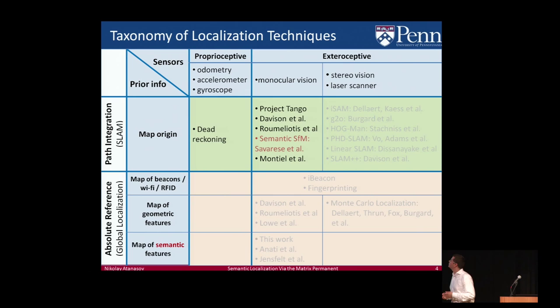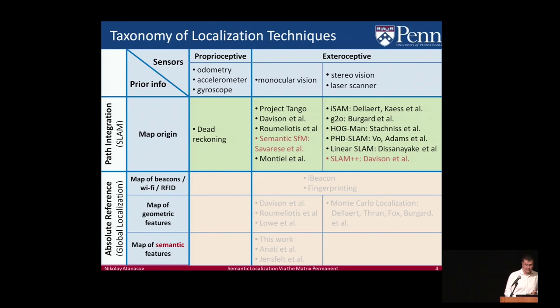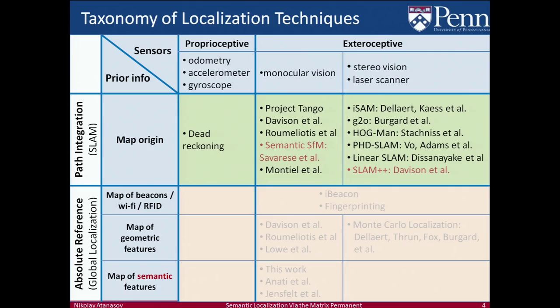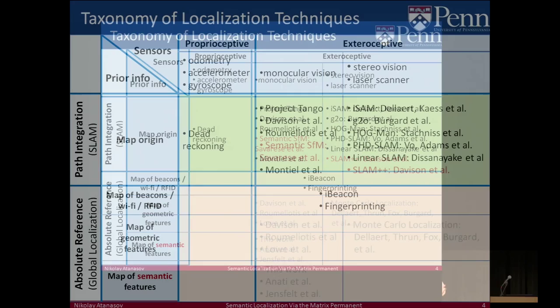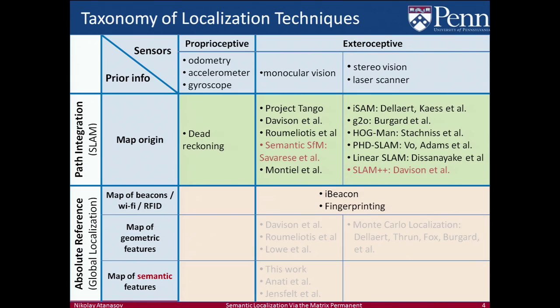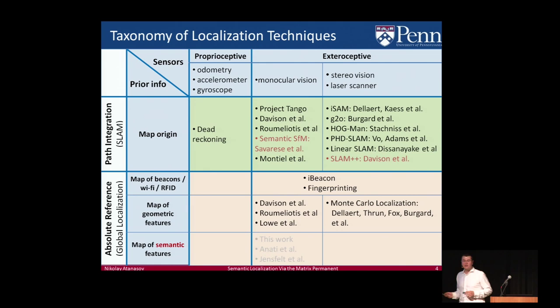There has been a lot of exciting work going on in SLAM in general. When considering absolute reference, it depends on the prior information. Hot areas nowadays include iBeacon by Apple, which uses a prior map of active beacons to localize. Using a map of geometric features leads to more traditional approaches like Monte Carlo localization. Finally, we propose to add semantic information on top of the geometric features.